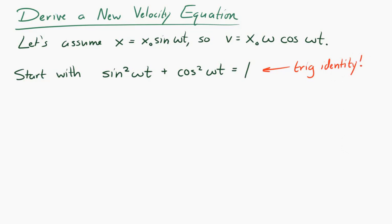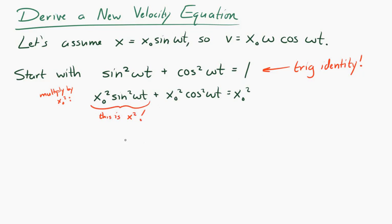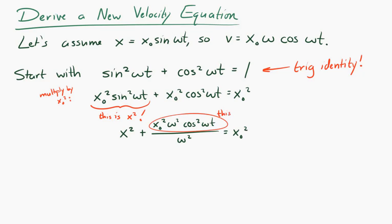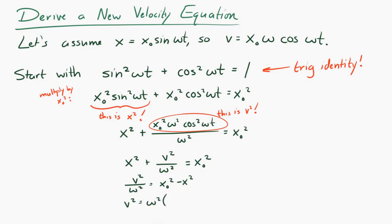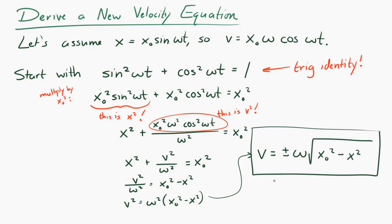Multiplying everything by amplitude squared, the first term becomes displacement squared. Then dividing the second term by omega squared, the numerator becomes velocity squared. Rearranging with a couple of algebra steps to isolate the velocity, we end up with an equation that is useful for finding the velocity of an object in simple harmonic motion if you know the displacement from equilibrium instead of the time.